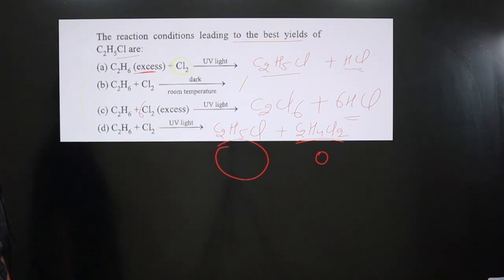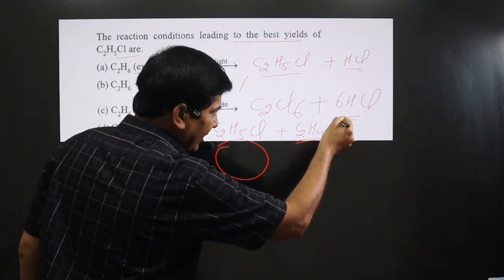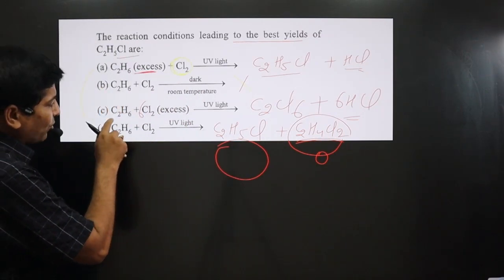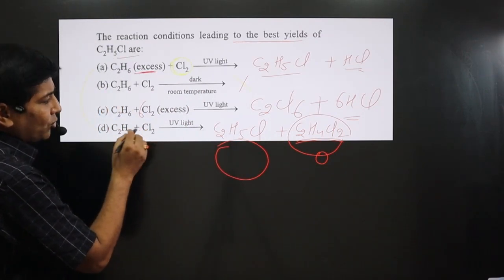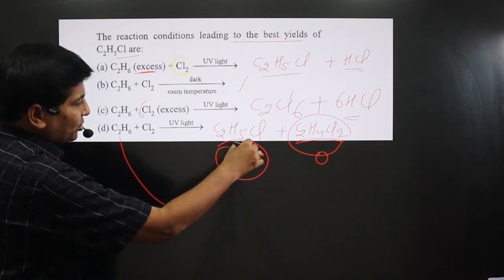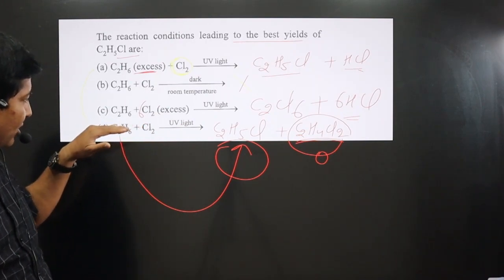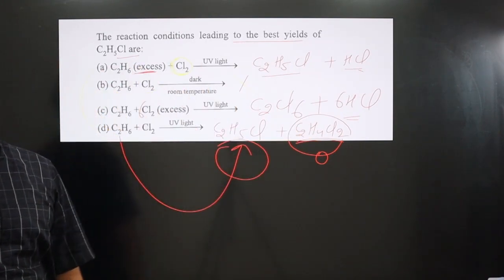Since some quantity of di-halide is formed, the entire quantity of C2H6 as well as Cl2 is not used in the production of C2H5Cl, because some quantity of these reactants are also converting into di-halide.